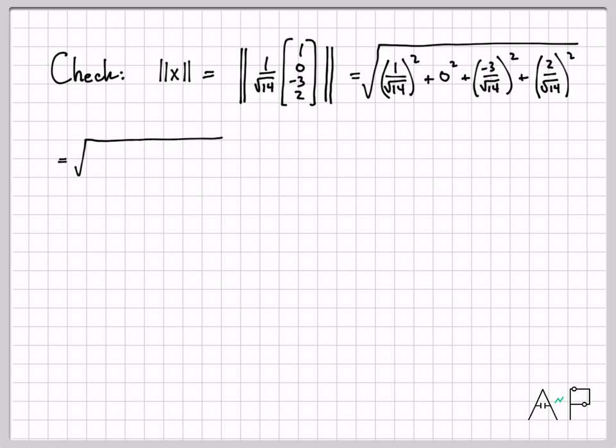Let's simplify that. 1/√14 squared is 1/14. 0 is just 0. -3 squared is 9, so I get 9/14, and then 4/14. You can see what's going to happen here: 1 + 9 is 10, 10 + 4 is 14. These all have a common denominator, so I can add those up. I get 14/14, which obviously is 1.